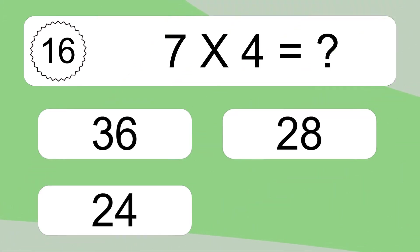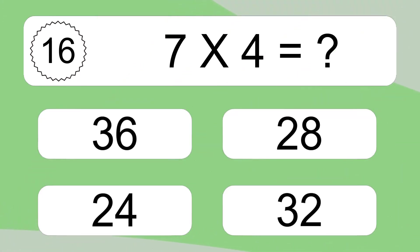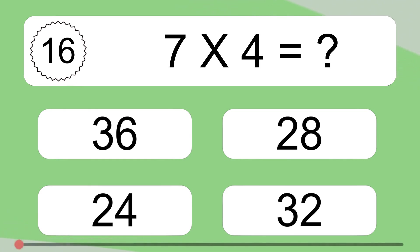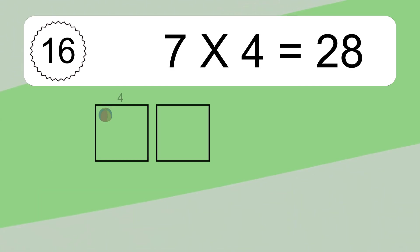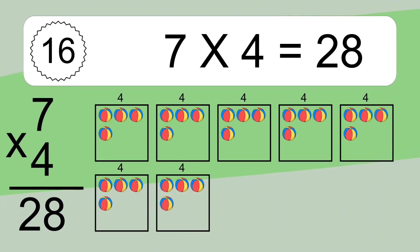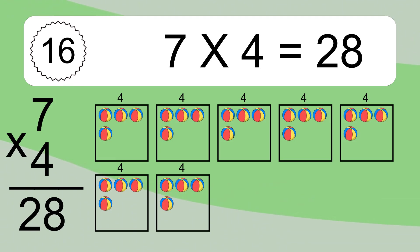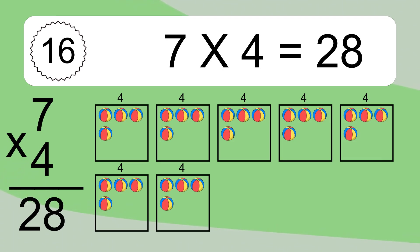Seven times four equals what? Seven times four equals twenty-eight. We have seven boxes, and each box has four colorful balls inside. If you count all the balls in all the boxes together, you will have seven times four balls. This equals twenty-eight balls.